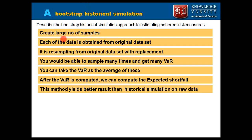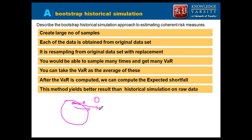What happens in bootstrapping? We will create a large number of samples, all drawn from the original dataset. From the original dataset we create a large number of samples, and these are created by sampling data with replacement. So if you have a dataset, you take one value, plug it back, and then randomly take another value — the same data point can come up again. Each data point is taken and then replaced, so it is resampling from the original dataset with replacement.